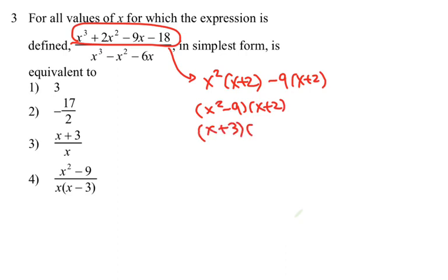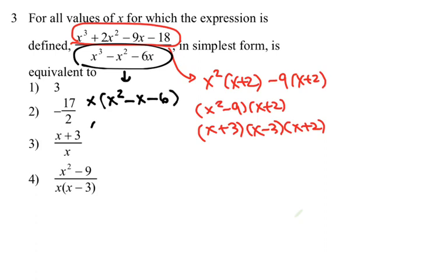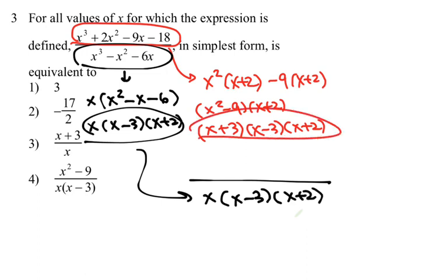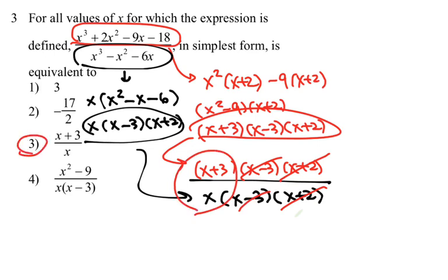We factor the difference of squares further to get x plus 3 and x minus 3, with x plus 2 as the numerator. For the denominator, x is a common factor, and we're looking for two numbers that multiply to negative 6 and add to negative 1 — which is x minus 3 and x plus 2. Rewriting the fraction using these factors and canceling the common factors x minus 3 and x plus 2, we are left with choice 3.